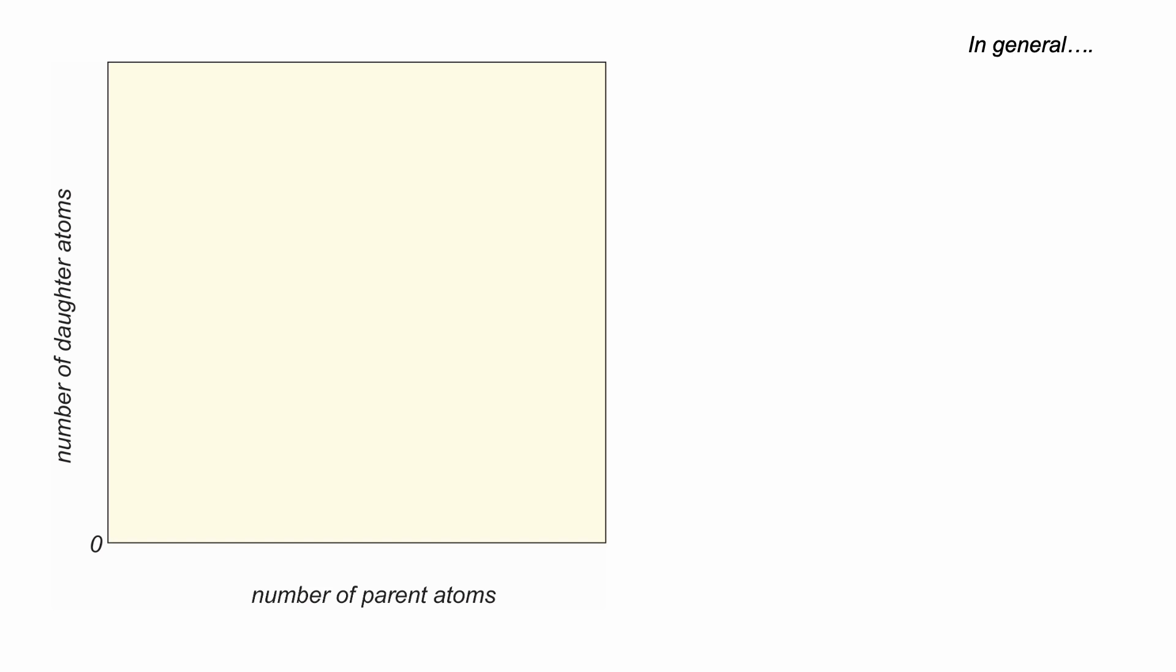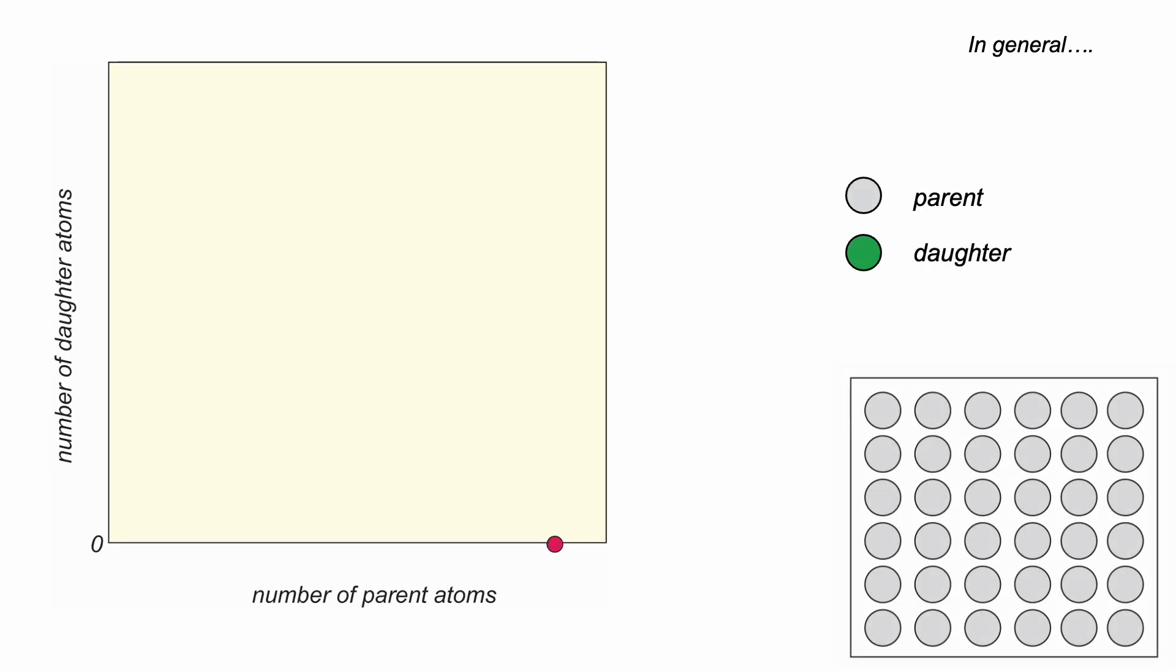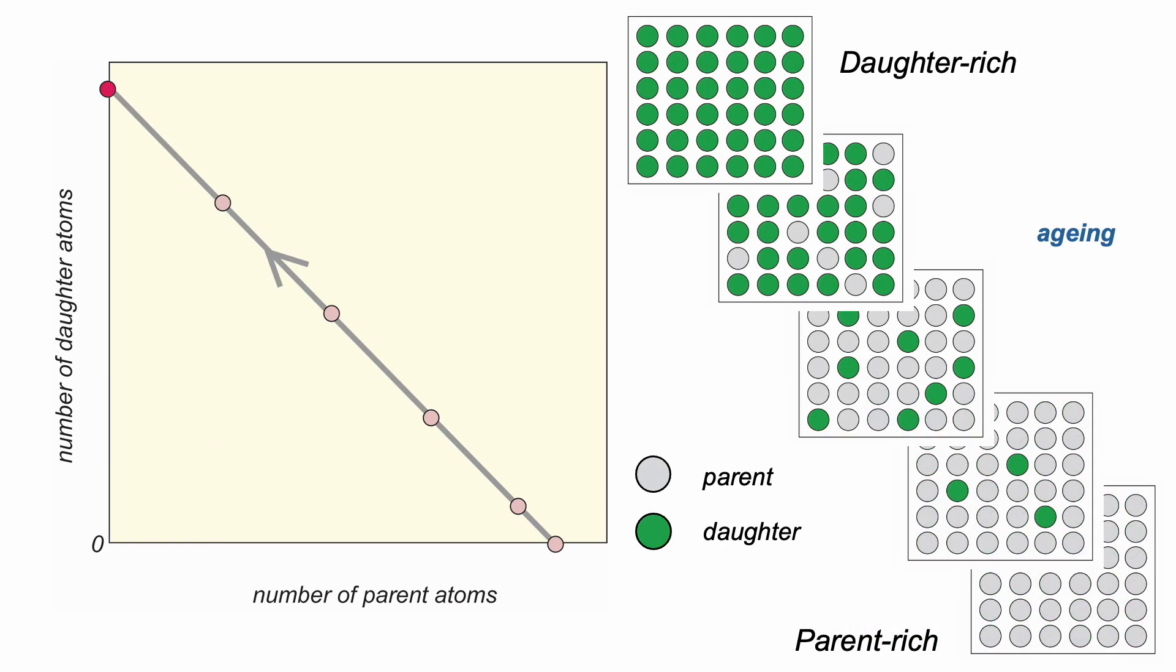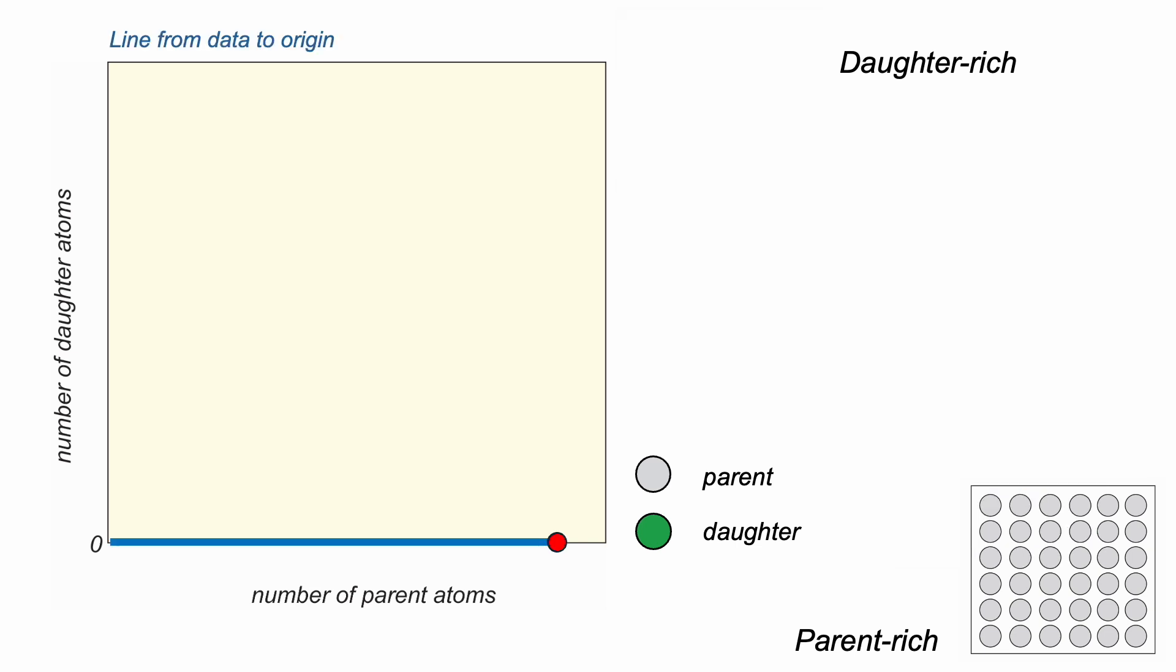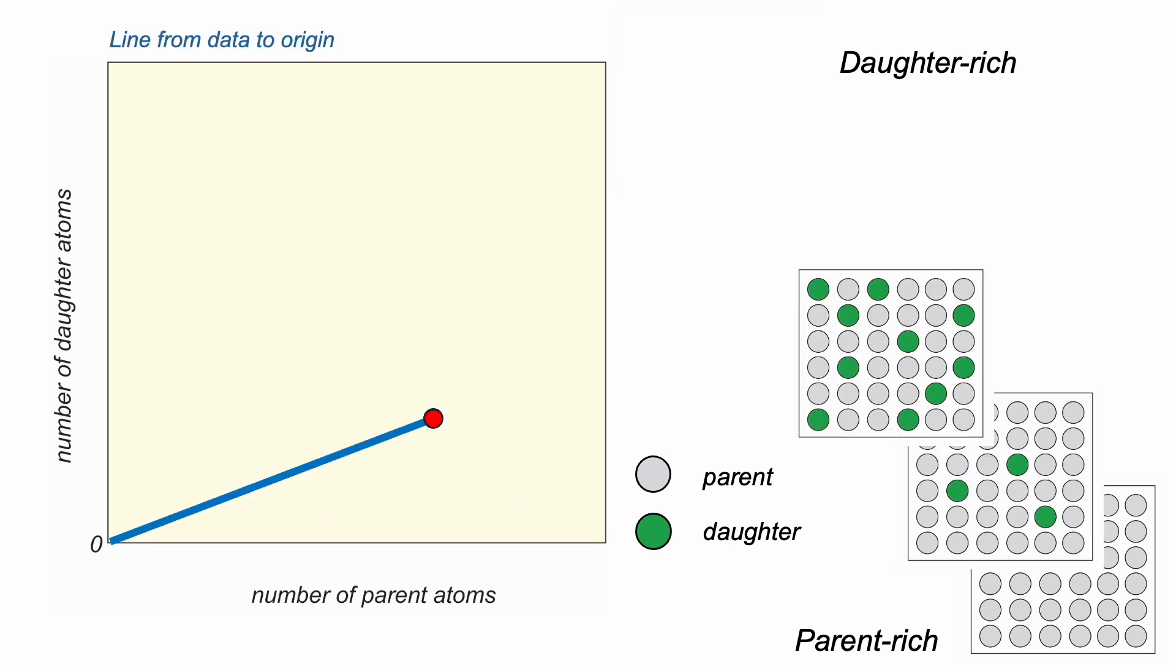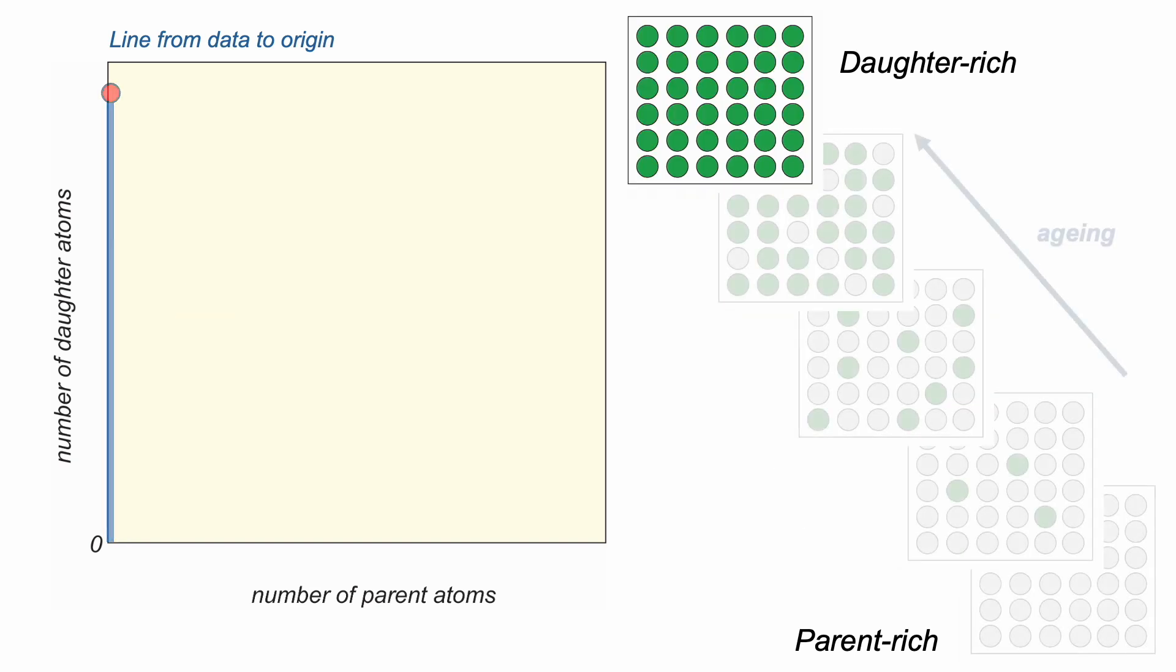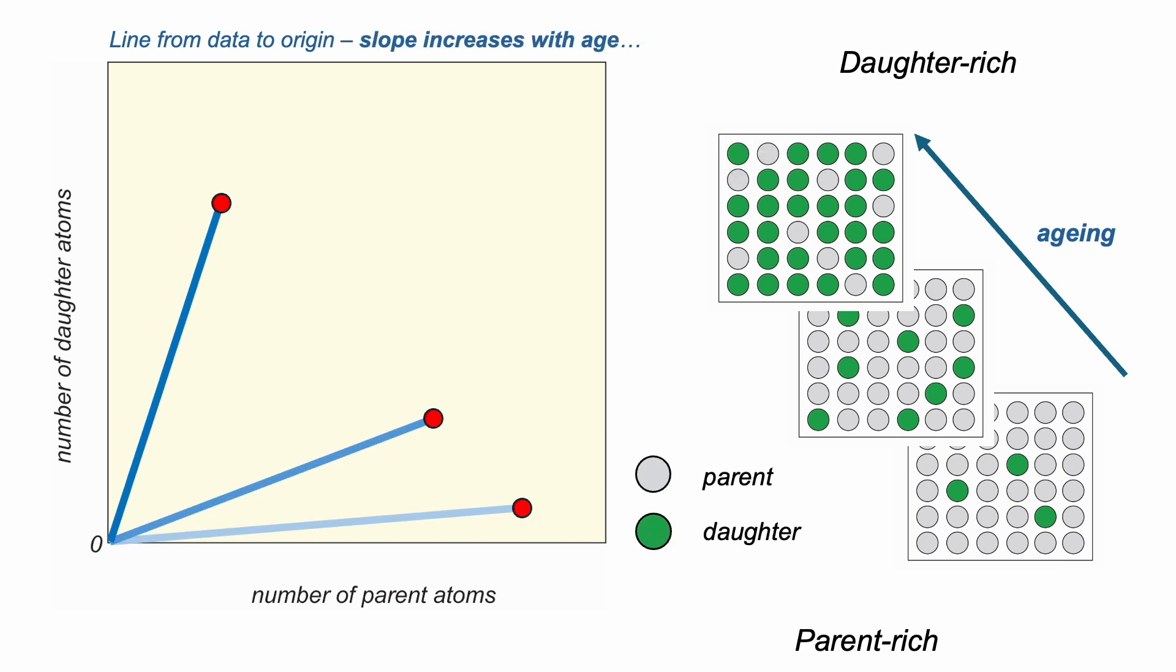Consider being able to simply chart the number of parent and daughter atoms in a sample as the sample gets older. We'll start simply here with only parent atoms, but over time these decay to daughters, so the daughters increase in number as the parents decay away. This shows the evolution of the composition of our sample. We can draw a line between our parent-daughter data point to the graph's origin. So as the sample gets older, the slope of this line increases. The slope of the line relates to the age of the sample.